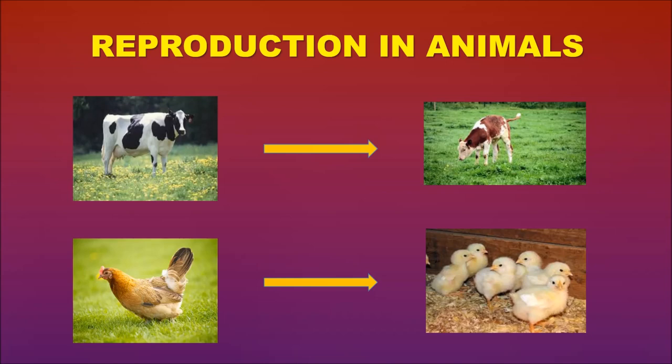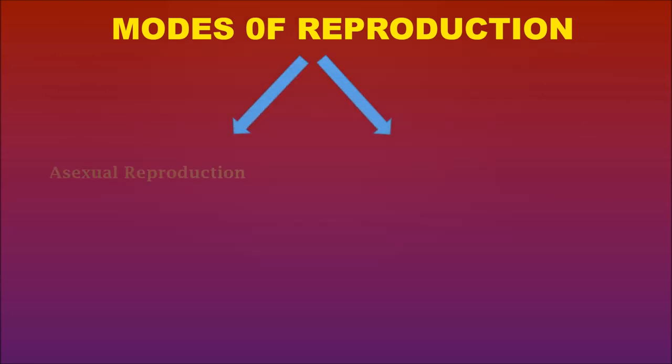In this manner, all the living organisms, including microorganisms, reproduce to maintain their population on this earth. There are two modes of reproduction: asexual reproduction and sexual reproduction.